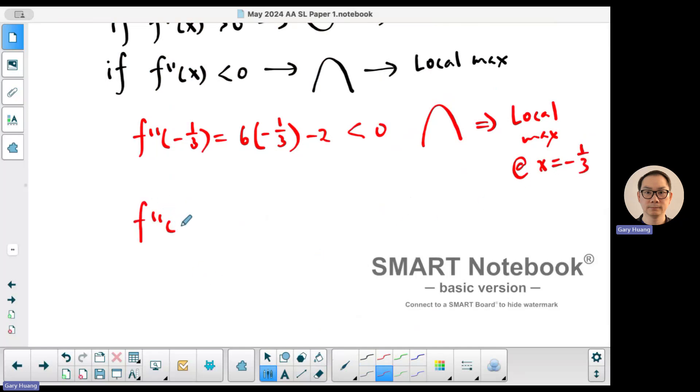Now you can also double check the other point. That's 6 times 1 minus 2 which is going to be positive 4. Positive 4 is going to be positive telling me that the graph is concave up, and that would be a local minimum at x equals to 1.